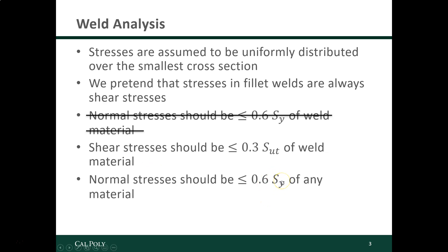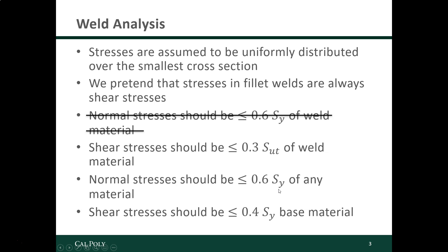Sy doesn't always refer to the same thing — it depends on what we're analyzing. If we're analyzing the weld, we use the welded material's properties. If we're analyzing the attachment, there could be some base metal mixed in with the welded material, and it could have been annealed by being heated up during welding, so you can't assume the stronger cold-worked properties — you have to use the lower annealed or hot-rolled properties. Far away from the welded region, use the base metal's properties. Also, shear stresses should be less than or equal to 0.4 times the yield strength of the base material.